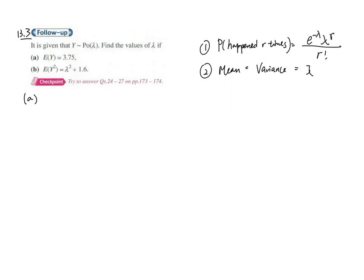Example 13.3 follow-up questions. For part a, the question gives you the expected value equals 3.75, and since the expected value equals lambda, which means that lambda equals 3.75. So part a should be very easy.